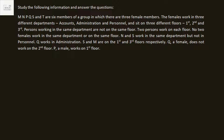Another perfect grid-type question on the screen. Pause and try to solve it yourself. M, N, P, Q, S, and T are six members of a group in which there are three females and three males.